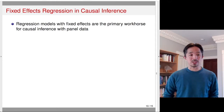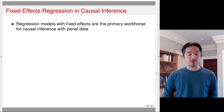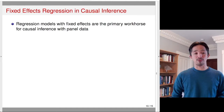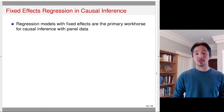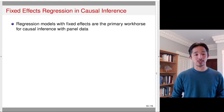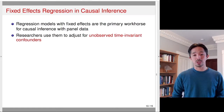Next, we discuss the fixed effects regression in causal inference. Regression models with fixed effects are a primary workhorse for causal inference with panel data. Especially in social sciences, you see this used a lot. Researchers use them to adjust for unobserved time-invariant confounders.